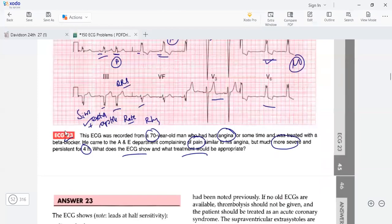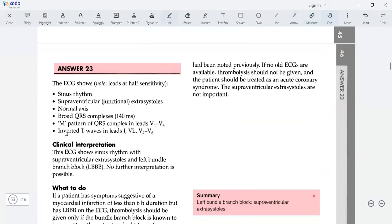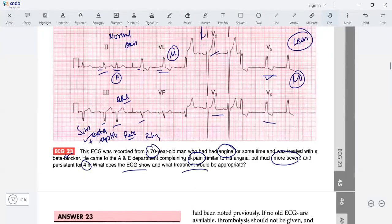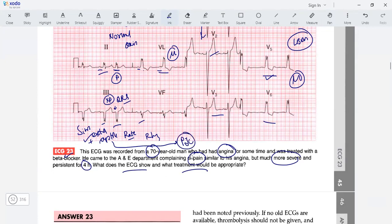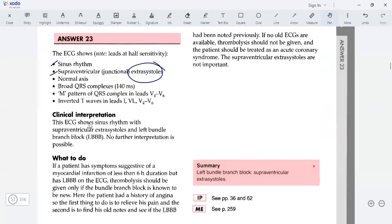Let's see what the assessment says. The book confirms sinus rhythm with extra systoles. These extra systoles have no P wave, so they are junctional extra systoles or premature junctional complexes. Whenever you have a P in front of the extra systole, it's atrial. Without a P, it's junctional. The broad QRS complex with M pattern indicates left bundle branch block. So we have LBBB and junctional extra systole, or supraventricular extra systole.